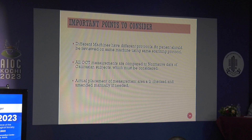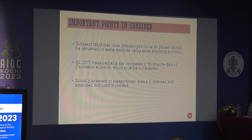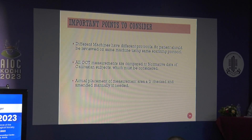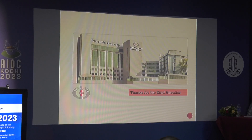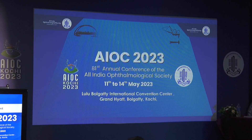In closing, the important points to consider: different machines have different protocols, so patients should be reviewed on the same machine using the same protocol. All OCT measurements are compared to normative data of Caucasian subjects, which must be considered. Actual placement of the measurement area should be checked and amended manually if needed — for example, when examining the optic nerve area, it should be properly centered, and you should manually correct any decentration, otherwise the values will be fallacious. Thank you for your kind attention; I am happy to answer any questions.